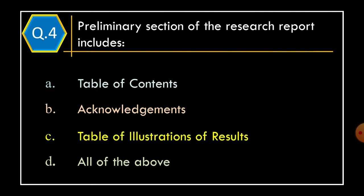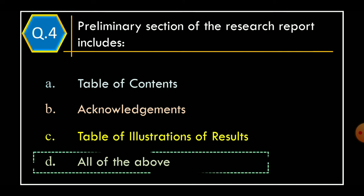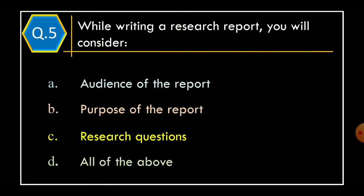Question 4: The preliminary section of the research report includes — Option A: Table of Contents. Option B: Acknowledgements. Option C: Table of Illustrations of Results. Option D: All of the Above. The correct option is Option D, All of the Above.